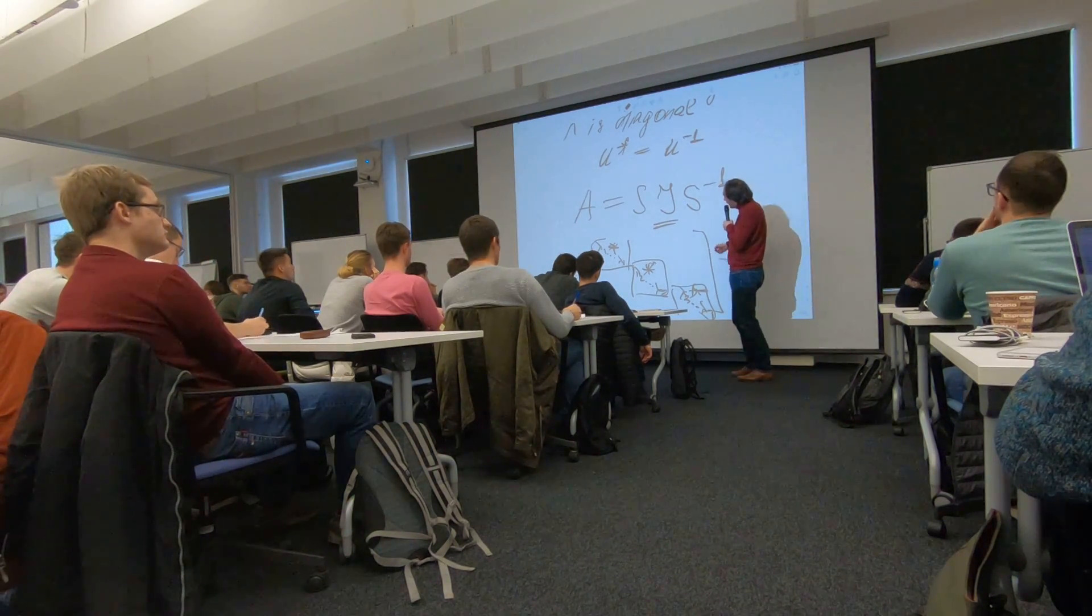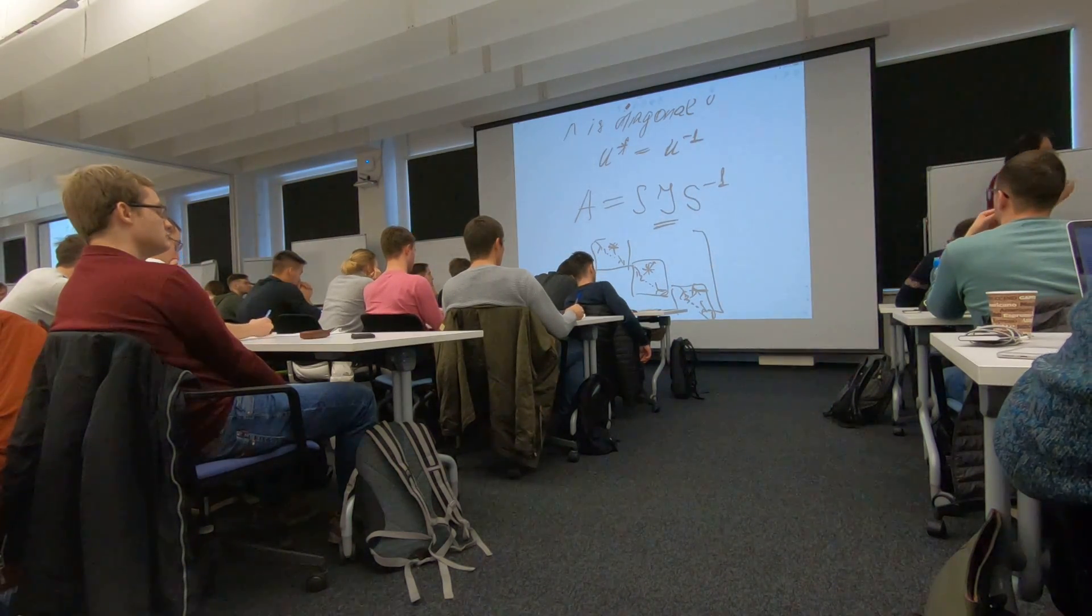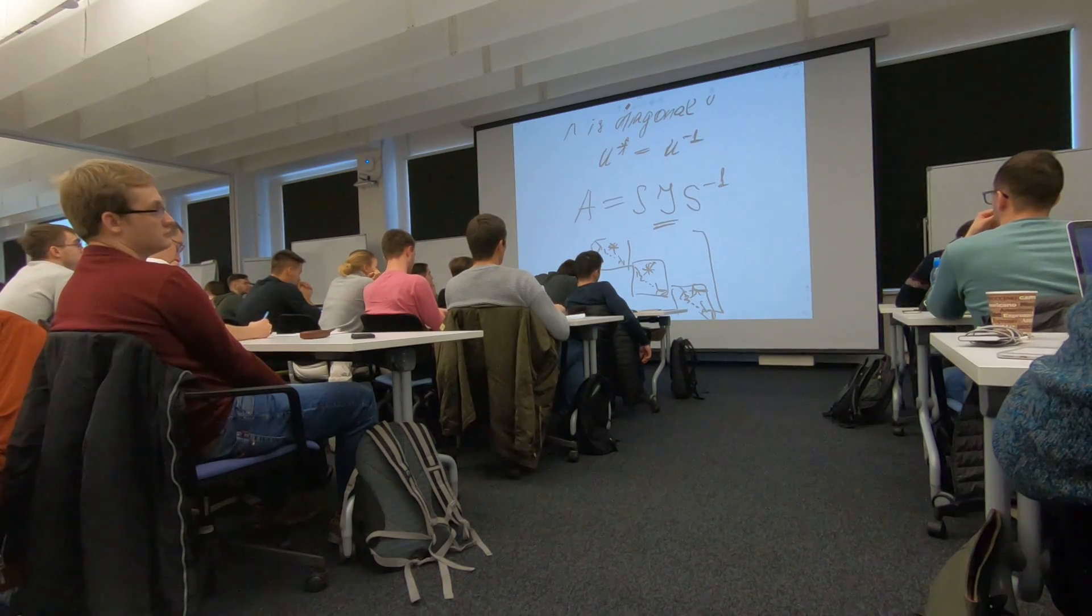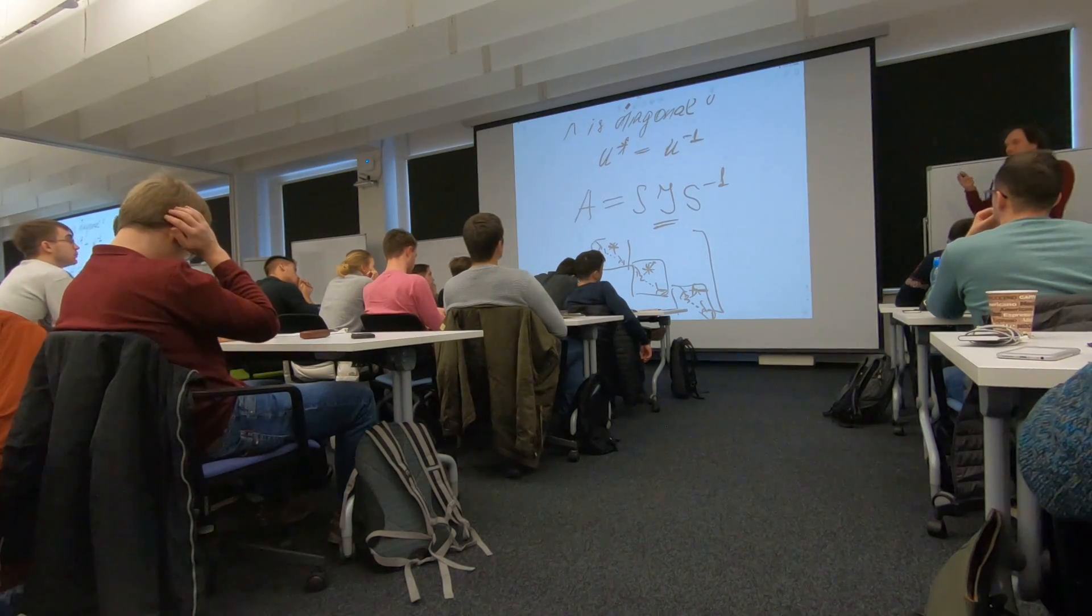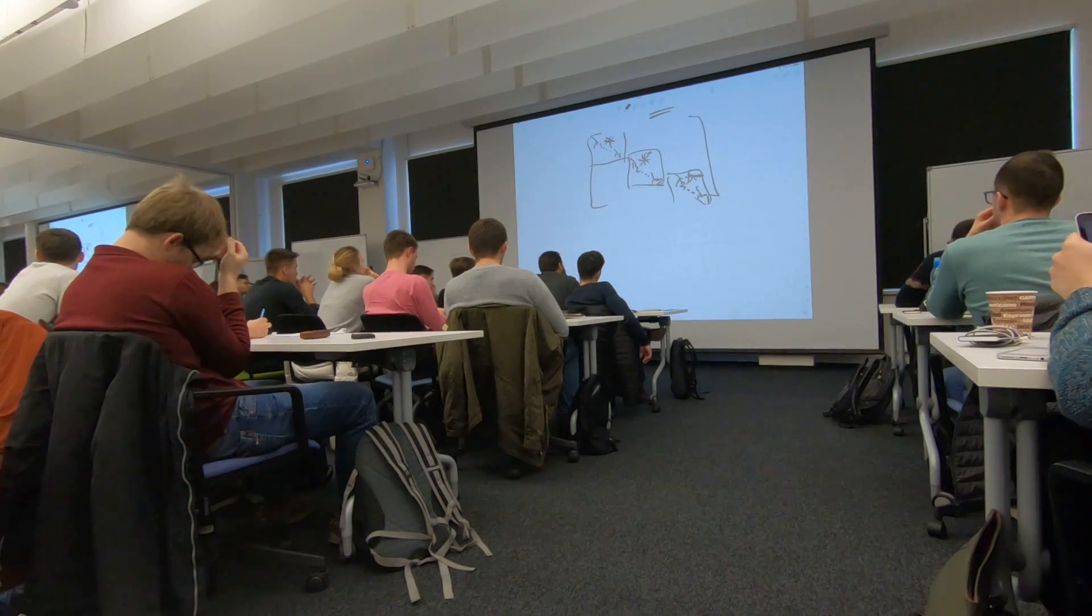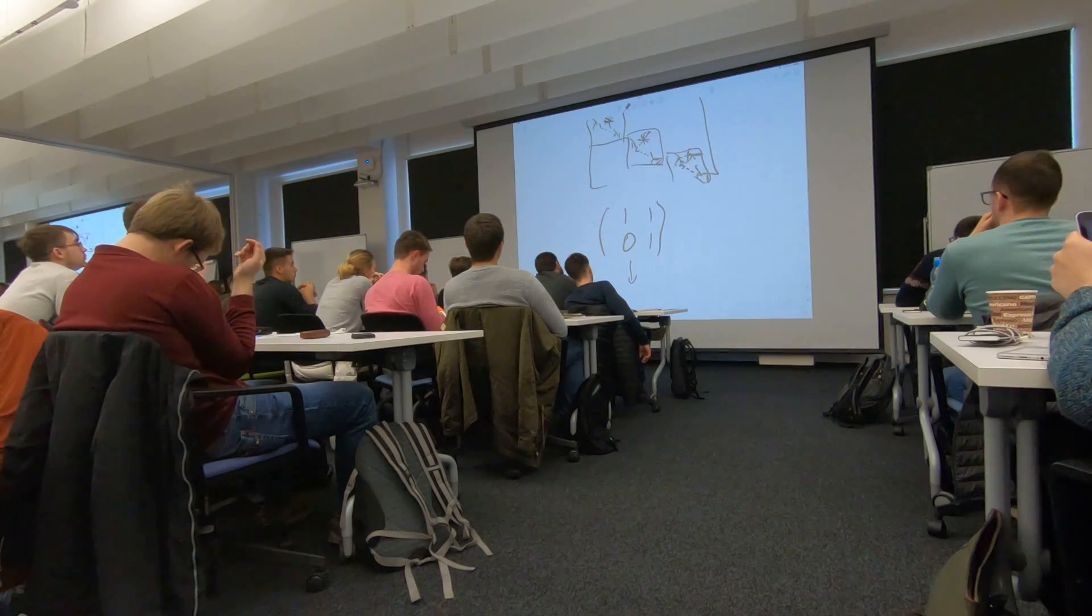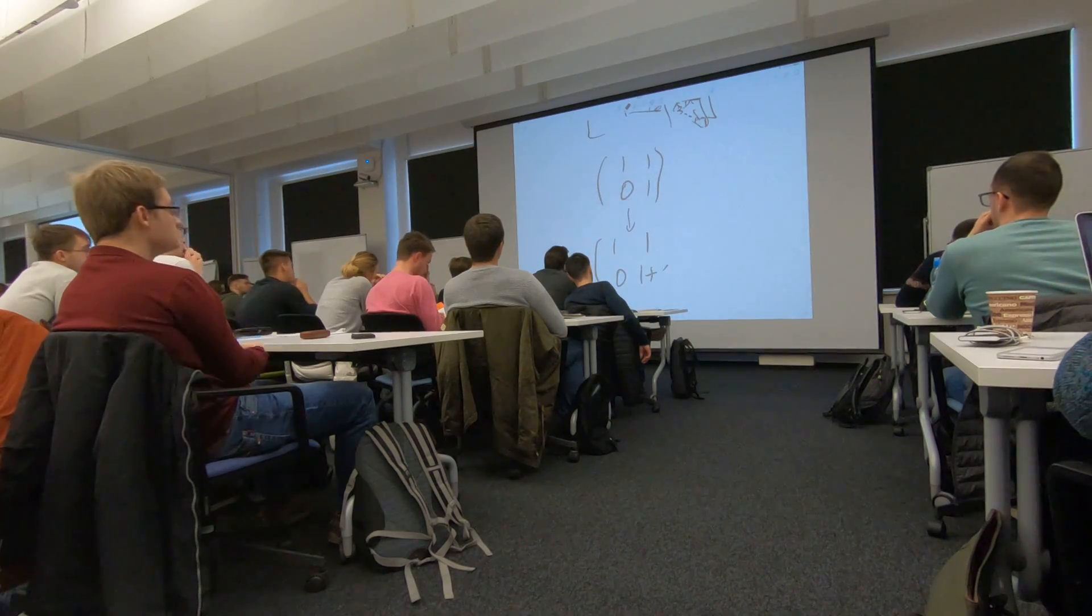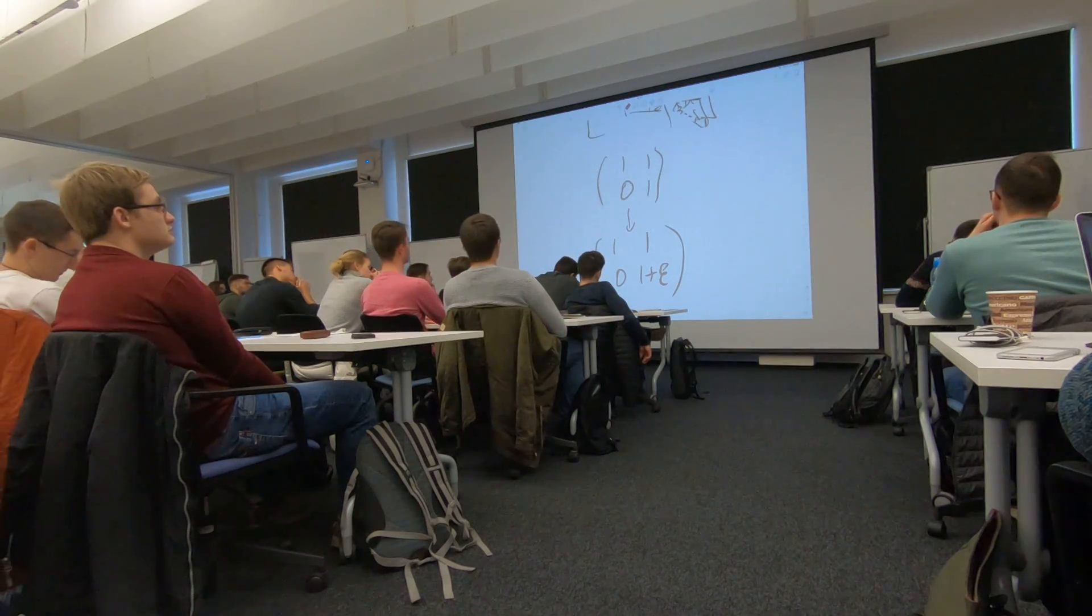But why Jordan form is never used in practice? Because it requires that the matrix has the same eigenvalues that have algebraic multiplicity larger than one. So it has the same eigenvalues, but even if you take a small perturbation of such a matrix, for example, we take this matrix, right, which is the Jordan block, and we make an arbitrary small perturbation, for example, due to machine precision. Now it has two different eigenvalues, and hence, it's diagonalizable.